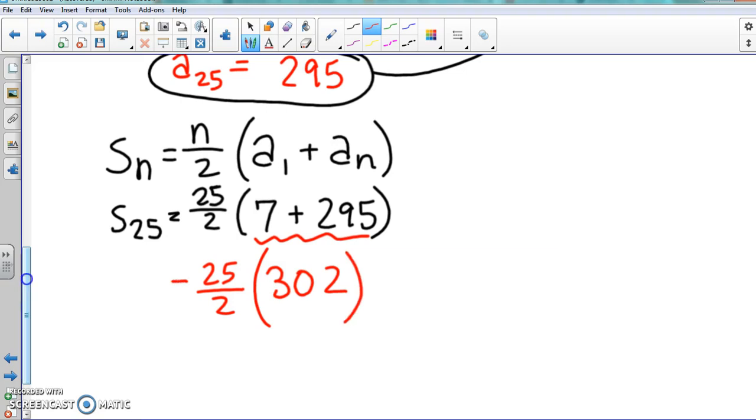302, right? Excellent. Okay, so we can cancel this 2 with the denominator. Doesn't that give us like 151? Because half of 30 is 15 and half of 2 is 1, so it's 151.